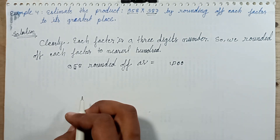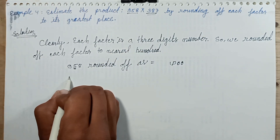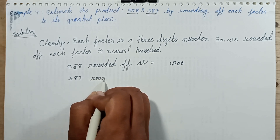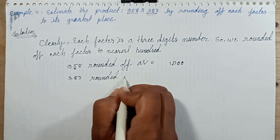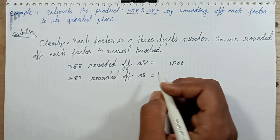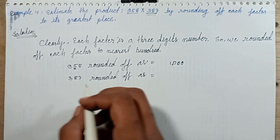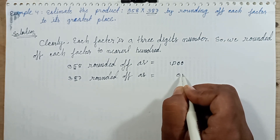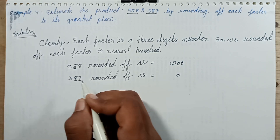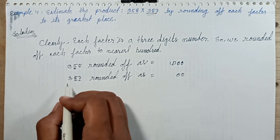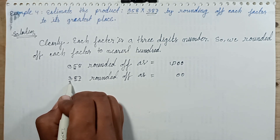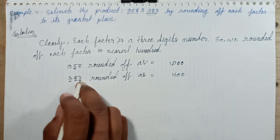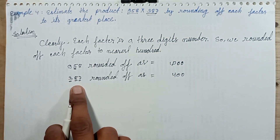Next, three hundred eighty-seven: eight is greater than five, so replace eight with zero and replace seven with zero as well. Then increase the hundreds digit by one: three plus one is four. So three hundred eighty-seven rounded to the nearest hundred is four hundred.